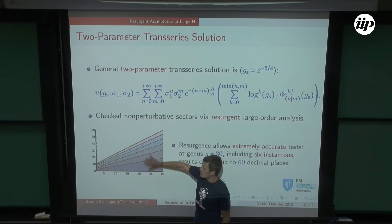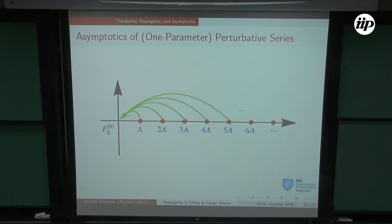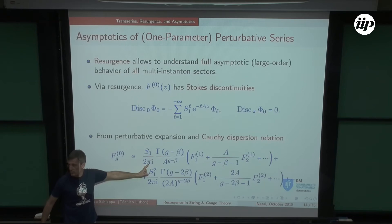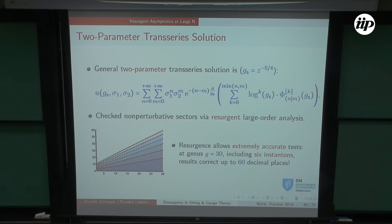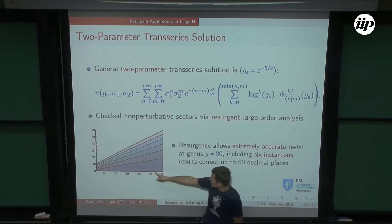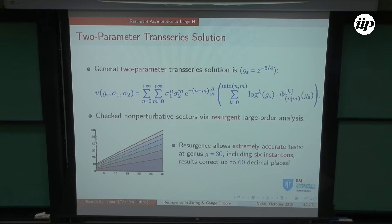Here's an asymptotic test: looking at the rational number sequence at large order, I include instanton contributions and check whether they match those rational numbers — nontrivial because there are factors of pi and square root of 3. Going up to genus 30 and including up to six instantons, checking how many digits match: 60 digits match. This should be convincing that the resurgent trans-series is working.